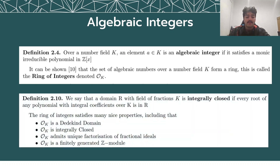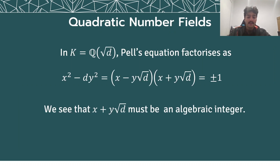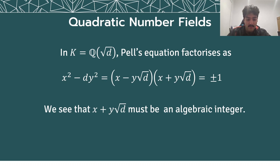It can be shown that the set of algebraic integers over a number field k forms a ring. This is called the ring of integers, denoted O_k. The ring of integers satisfies many nice properties, including that it is a Dedekind domain — it is integrally closed, O_k admits unique factorization of fractional ideals, and it is a finitely generated Z-module. A particular number field of interest is the quadratic number field k equals to Q adjoined square root of d. We can factorize Pell's equation in this field as (x + y√d)(x − y√d).